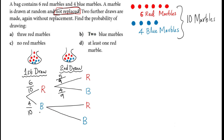Now consider the condition where the first draw gave you a blue marble. You will have one less blue marble in the bag, but all six red ones remain. The probability of taking the next blue reduces to three over nine, and the probability of red is six over nine, because all six red marbles remain and the total is now nine.